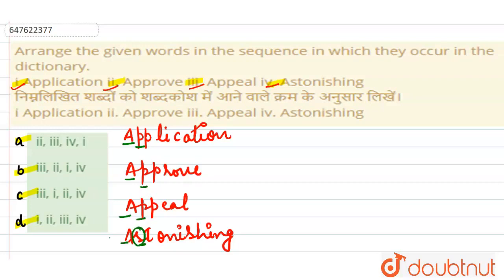Yanni ki jo S word hai, woh baad mein aata hai. Toh obviously, S word jo hoga, woh sabse last mein hoga. Kyunki first, second or third, teenon ke jo second letter hai, woh P hai. Siraf fourth jo word hai astonishing, uska second letter jo hai, woh S hai. Toh fourth jo hai, woh humare paas last one hoga. Right?